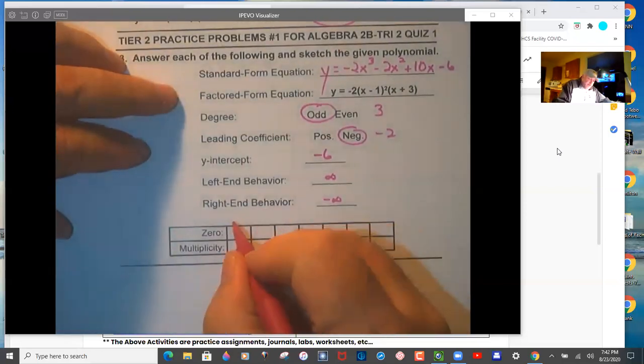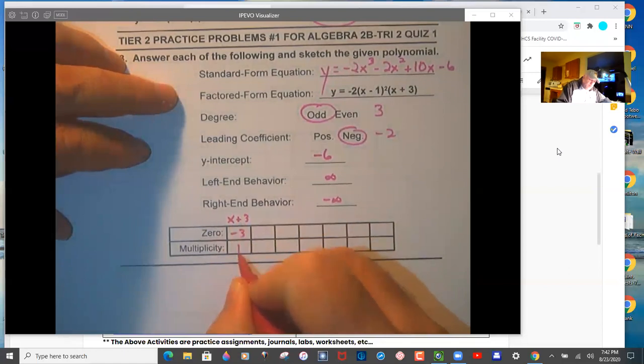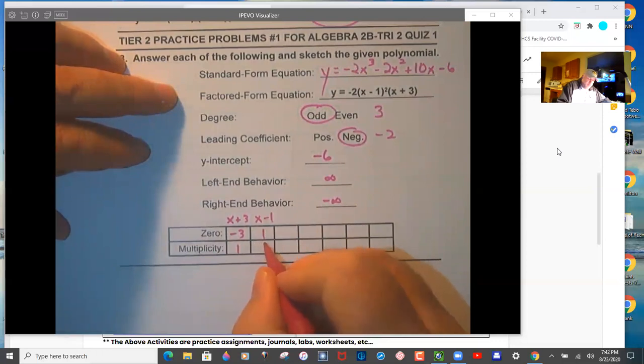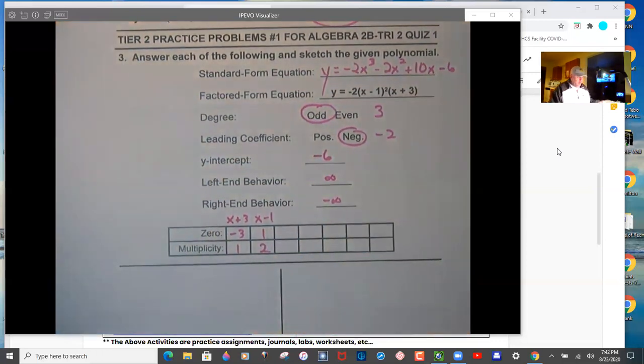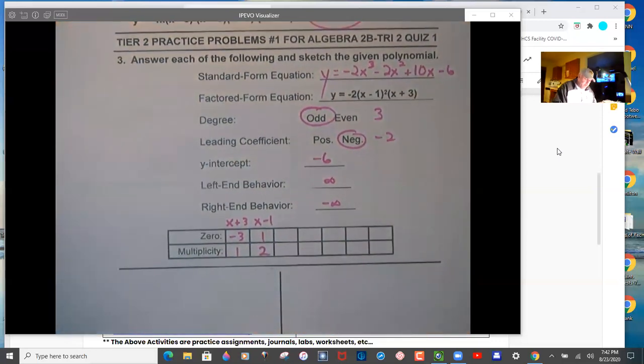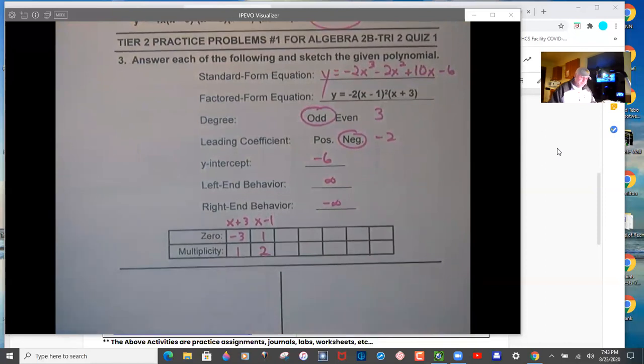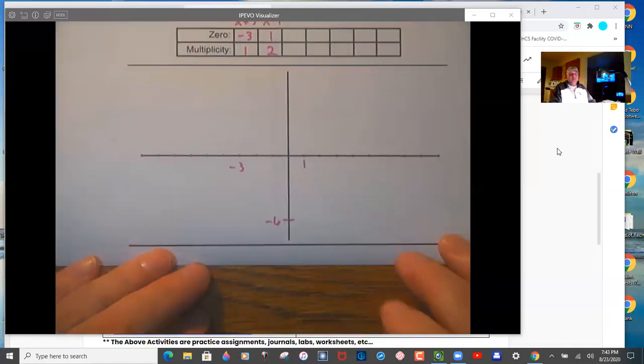So we have x plus three with the zero of negative three, multiplicity of one. And we have x minus one with a zero of one and a multiplicity of two. What does that look like on the graph? So negative three, negative six somewhere down here, and then one.